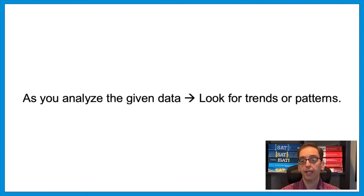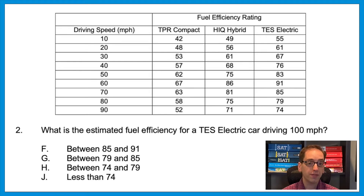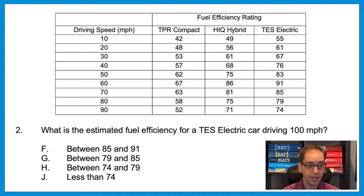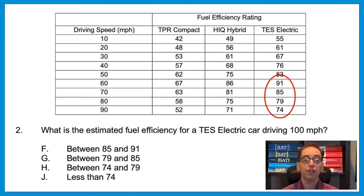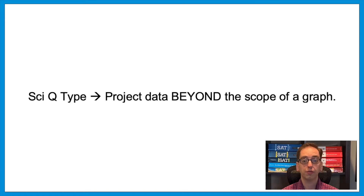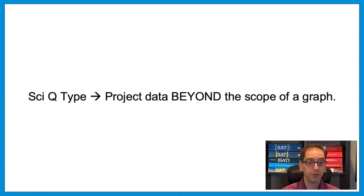Question two: What is the estimated fuel efficiency for a TES electric car driving 100 miles per hour? The table only gives us data up to 90 miles per hour. But look at what's happening in that last column — after the TES car peaks at 91, the fuel efficiency rating continues to dip: 85, 79, 74. You are allowed to continue that trend to 100 miles per hour. The answer is J, less than 74. You are allowed to project the data beyond the scope of the graph.